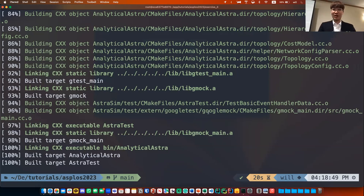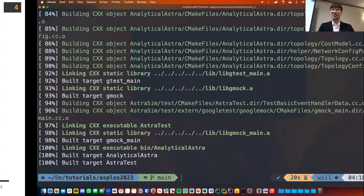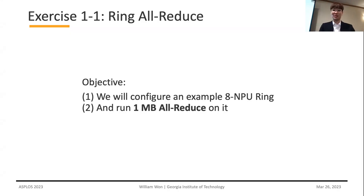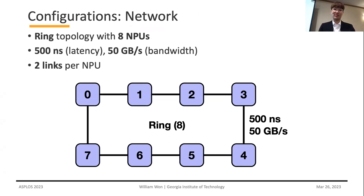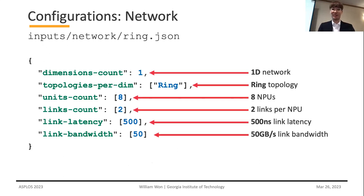AstroSym with the analytical backend is now built. Resuming the presentation: the first exercise is to run a simple single one-megabyte collective with eight NPUs. The target topology is a simple ring with eight NPUs. For each link, I set the link latency to 500 nanoseconds and the bandwidth to 50 gigabytes per second. The analytical backend requires specifying how many outgoing links each NPU has — for a ring, every NPU has two outgoing links. This is embedded in a JSON network configuration file as a 1D ring topology with eight NPUs.